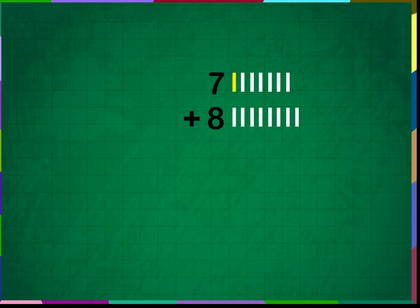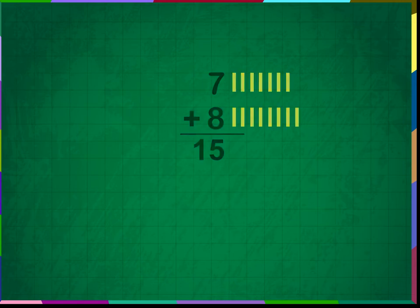Counting: 1, 2, 3, 4, 5, 6, 7, 8, 9, 10, 11, 12, 13, 14, 15. Seven plus eight is equal to fifteen. Fifteen is the answer.